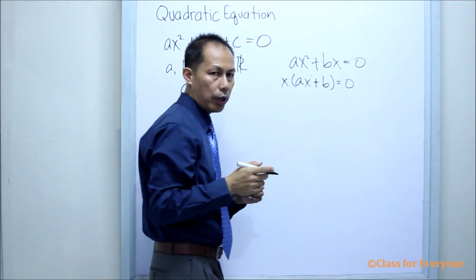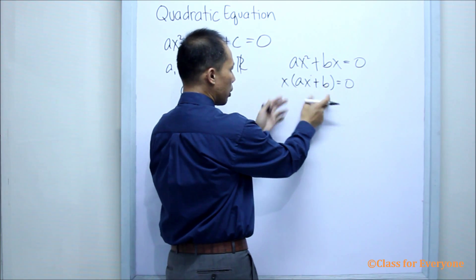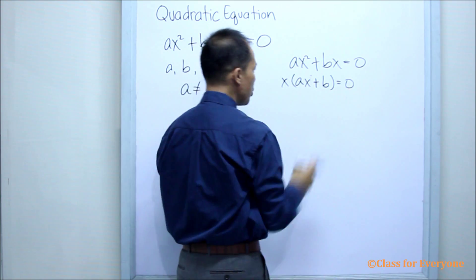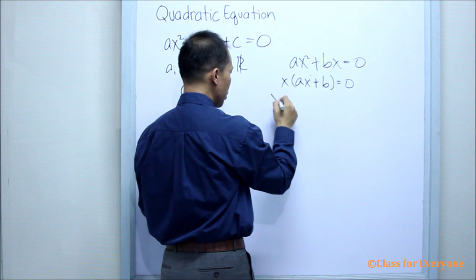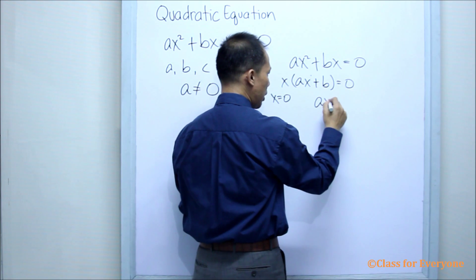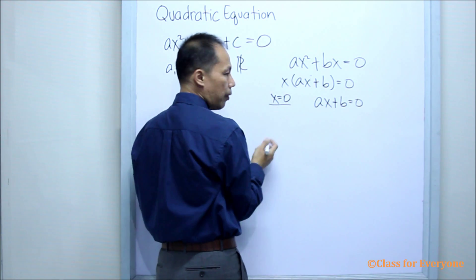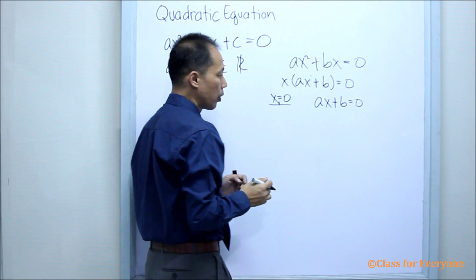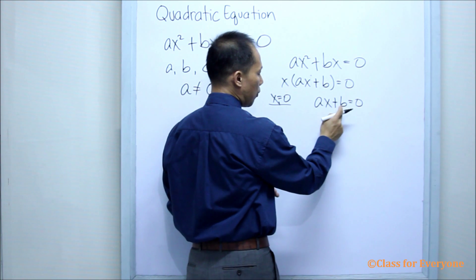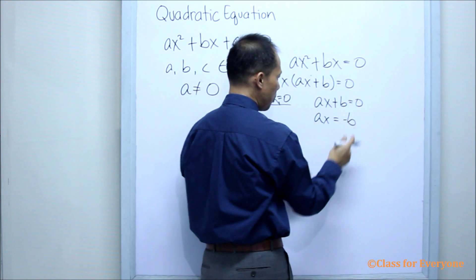Now, by the zero product theorem, one or both of the factors is equal to zero, because any number multiplied by zero will become zero. So suppose X is equal to zero — that gives us our first root. And if AX plus B equals zero, we solve for the second value of X.